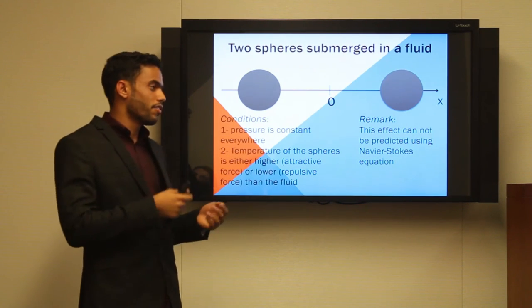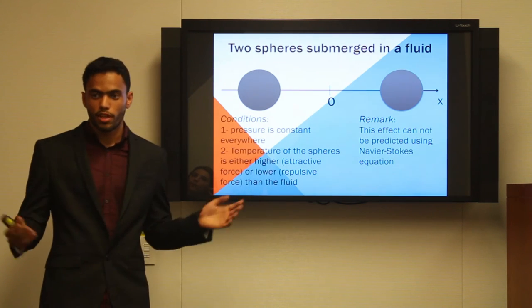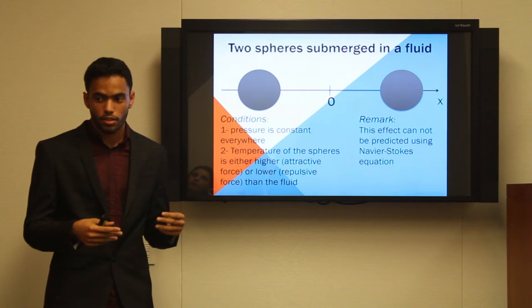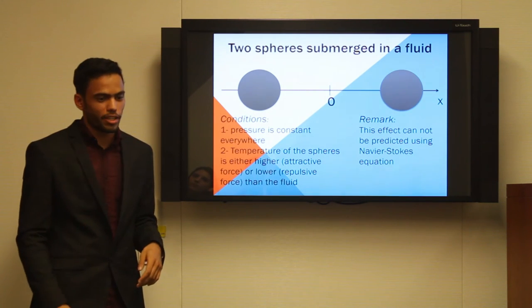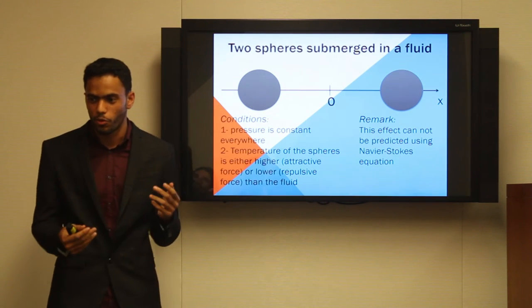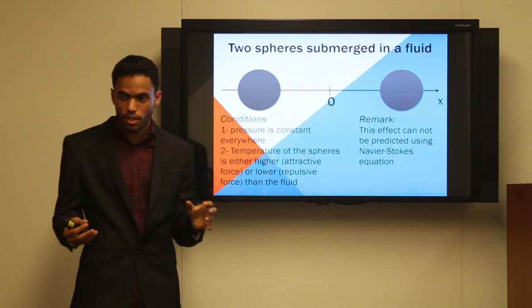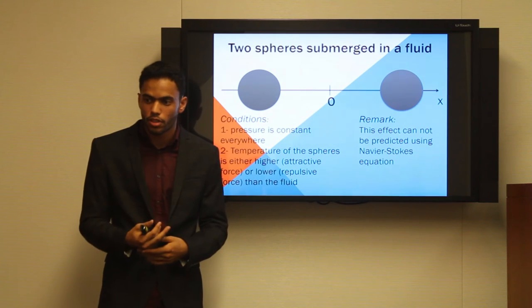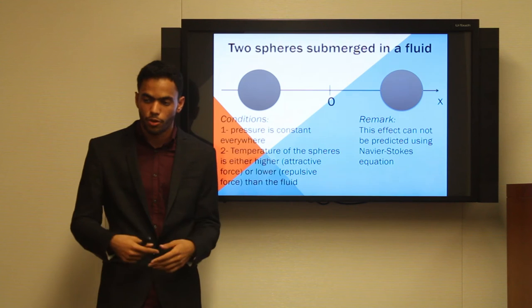The very first simple setup was that if you have a fluid and two spheres are submerged in it, the spheres could have either... we're just trying to see the effect that they will get attracted if their temperatures are higher than the surrounding, meaning the fluid. On the other hand, they will get repelled if their temperature were lower.